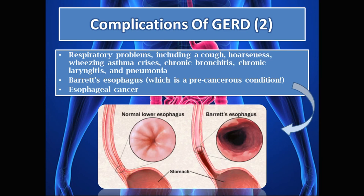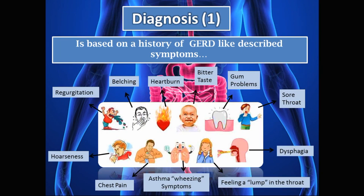Continuing with complications: we can have gum problems and tooth decay, as well as respiratory problems such as cough, hoarseness, wheezing, asthma crises, chronic bronchitis, chronic laryngitis, and pneumonia. Over time, GERD can lead to the development of Barrett's esophagus, which is a precancerous condition — a very important point to note — and in chronic long-standing GERD, esophageal cancer can develop.